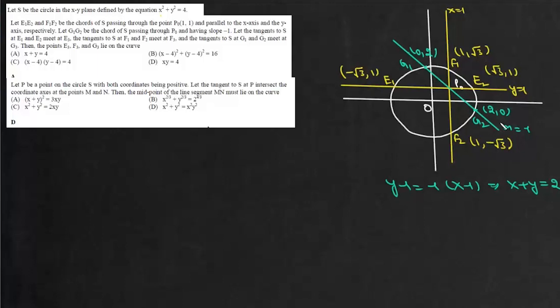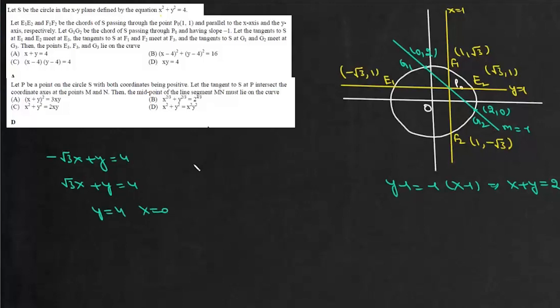Tangents to S at e1 and e2 meet at e3. Using T = 0, the tangent at e1 is −√3·x + y = 4 and at e2 is √3·x + y = 4. Solving these simultaneously gives y = 4 and x = 0. So e3 is (0, 4).